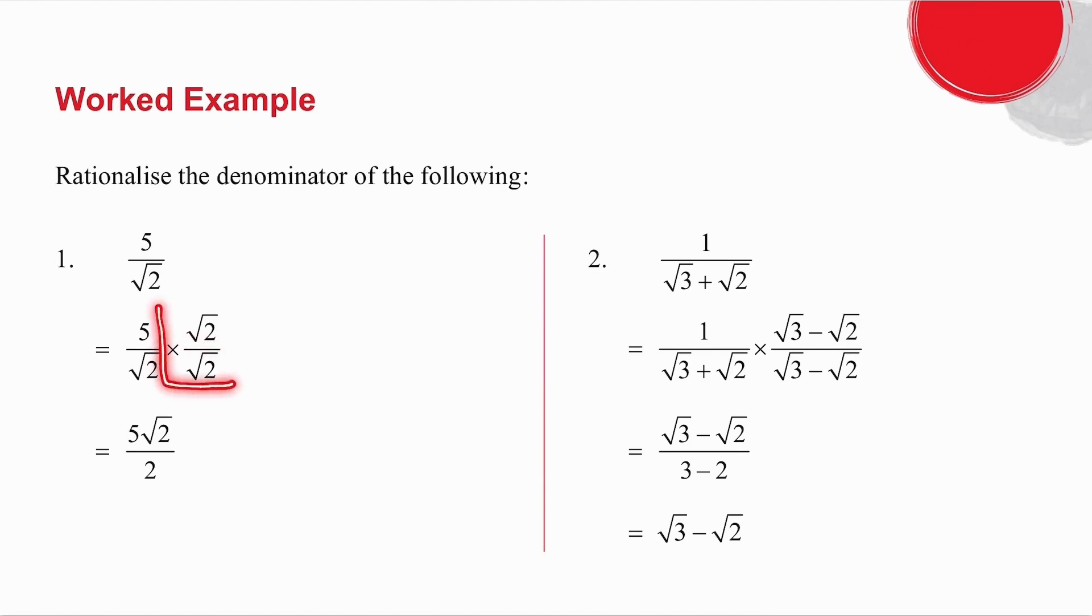And effectively what I'm doing is I'm multiplying by 1. If I multiply by 1, it doesn't change my number at all. It's just changing the form of the number. So this becomes 5 root 2 over 2. And there, the denominator of my fraction is no longer irrational.